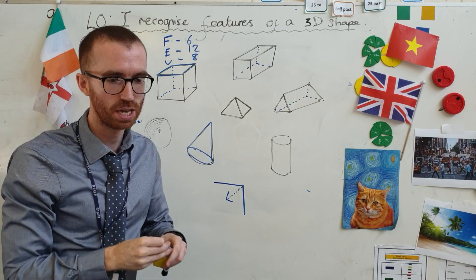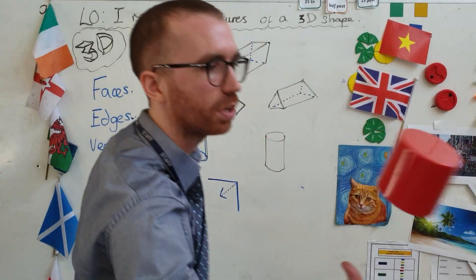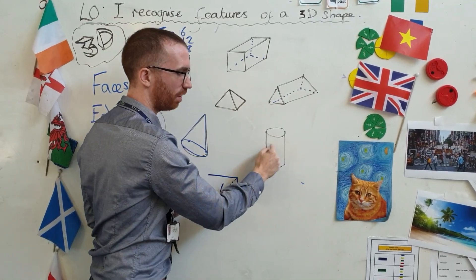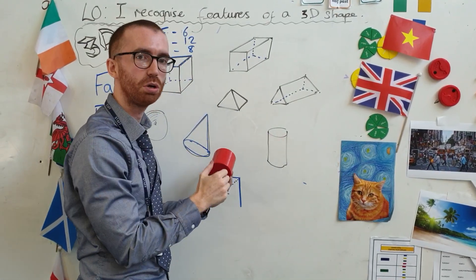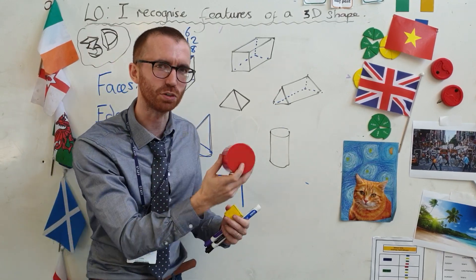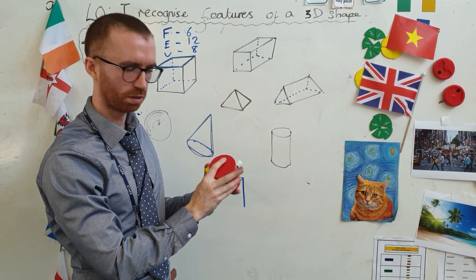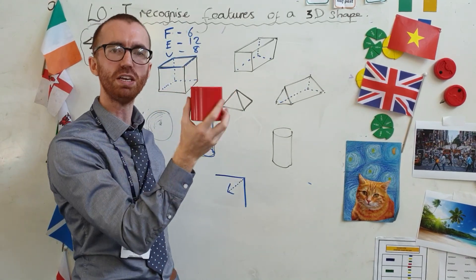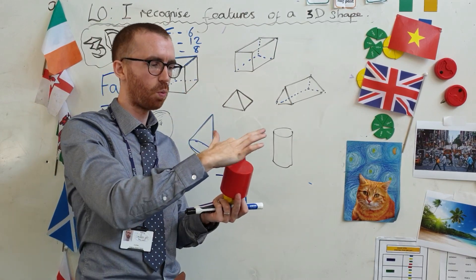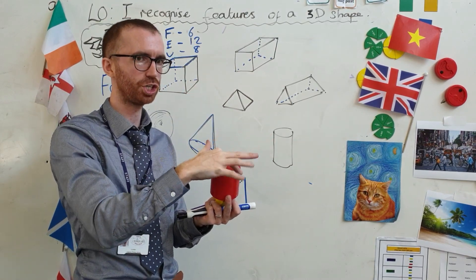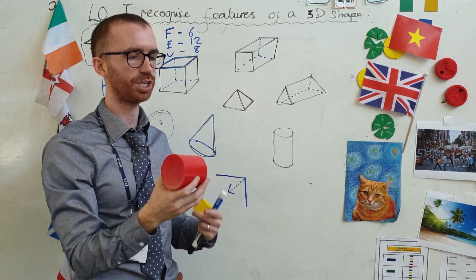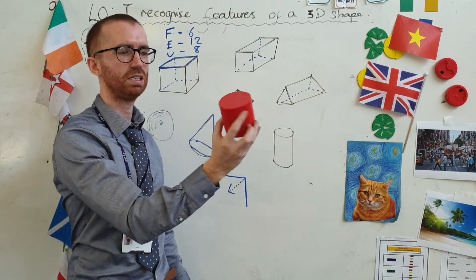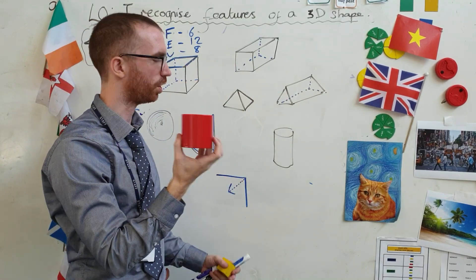This is another shape you'll definitely have in your house — it's a cylinder. It's got a circle on the top and the bottom. These are parallel lines and they're not going to meet at any point. It has 3 faces: one on top, one on the bottom, and one that wraps all the way around. It's got 2 edges, and no vertices, since no points come together.